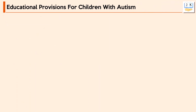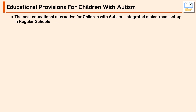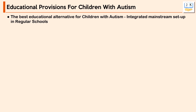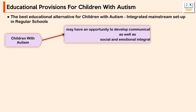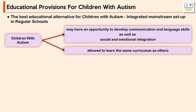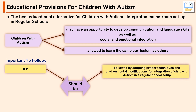The best educational alternative for children with autism is an integrated mainstream setup in regular schools, where education is provided alongside children without disabilities. This gives children with autism an opportunity to develop communication, language, social, and emotional skills and learn the same curriculum as their peers, supporting all-round personality development. An Individualized Education Program (IEP) should be followed with proper techniques and environmental modifications for integration in the regular school setup.